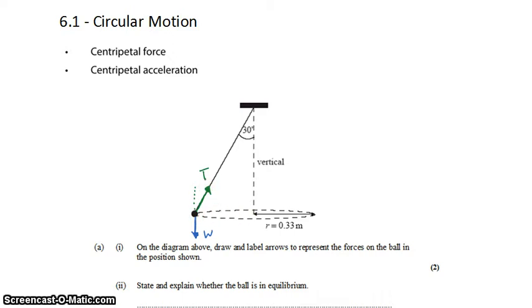The centripetal force is actually the horizontal component of the tension—what's left over from the tension after we subtract away the weight. So there is a centripetal force, and it is directly in towards the center of the circle, but it's not one of the unique forces acting on the ball.